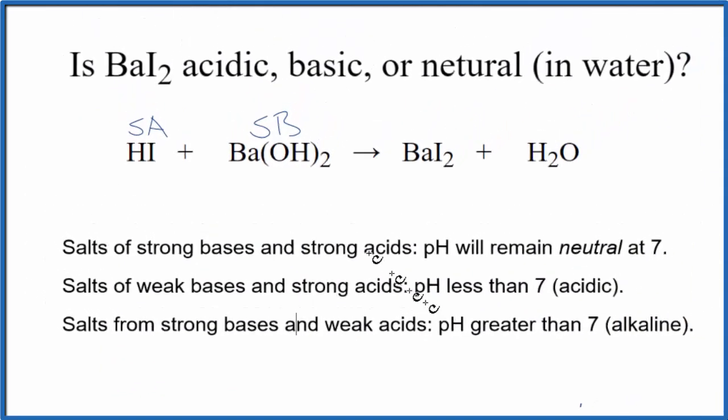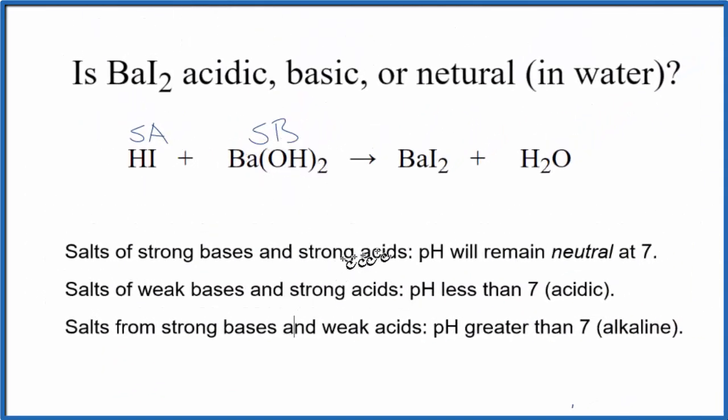So we're looking at our rules, we're looking for a strong acid and a strong base. Here's a strong acid, strong base. So according to the rules, we expect the pH will remain neutral at seven. So in answer to our question, barium iodide, when it's dissolved in water, the solution ends up being neutral with a pH of seven.